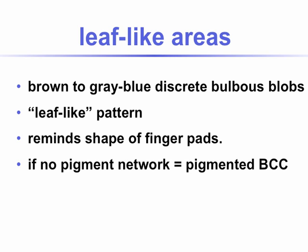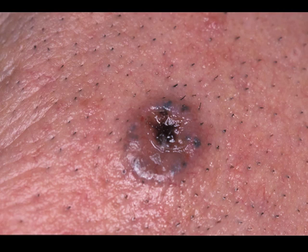In basal cell carcinomas, we see leaf-like areas. These are brown to gray-blue discrete bulbous blobs, forming a leaf-like pattern, reminding the shapes of finger pads. If there is no pigment network, this is very suggestive of a pigmented BCC.